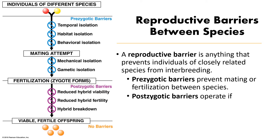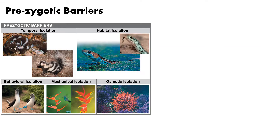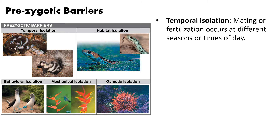Postzygotic means fertilization has already taken place and a zygote exists, but there will be a barrier preventing fertile viable offspring. If interspecies matings occur, a hybrid zygote forms and there can be problems with that hybrid. So to recap: prezygotic barriers happen before mating, postzygotic barriers happen after mating when egg has already been fertilized by sperm. There are five types of prezygotic barriers. The first is temporal isolation, where two species mate at different times of the season.